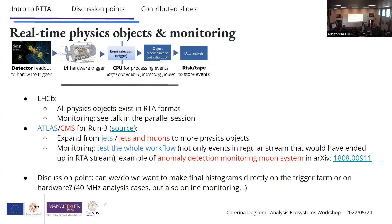In Atlas and CMS for run three: both are going to expand from what they're doing — Atlas is just doing jets and CMS is doing jets and muons — to more physics objects. That opens up new possibilities, and the idea is to give analyzers the option to use this format if they can deal with smaller information for more bandwidth. For monitoring in Atlas, we're trying to test the whole workflow; before, we only tested events ending up in the main physics stream instead of testing reconstruction from the alternate stream, which can go wrong.